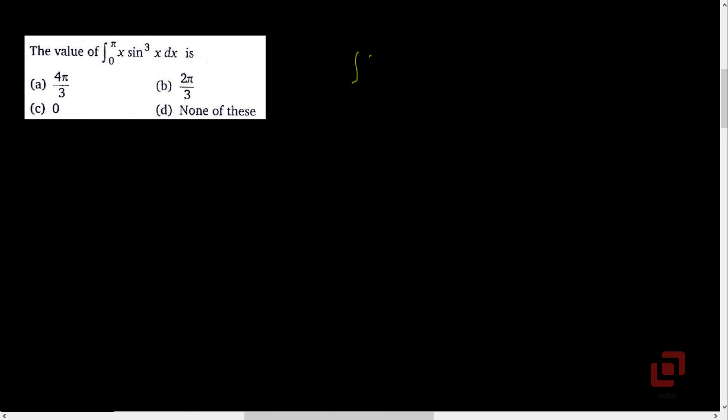Next question: the value of the definite integral of x into sin cube of x with respect to x, with limits 0 and pi. To solve this problem, we are going to make use of the following property: integral of f(x) from 0 to a is equal to integral of f(a minus x) from 0 to a.